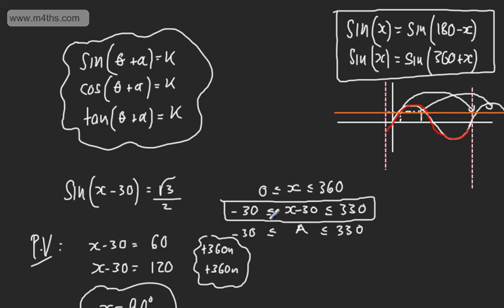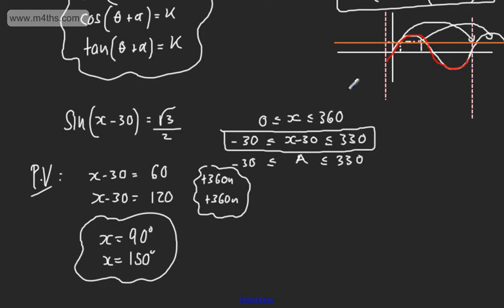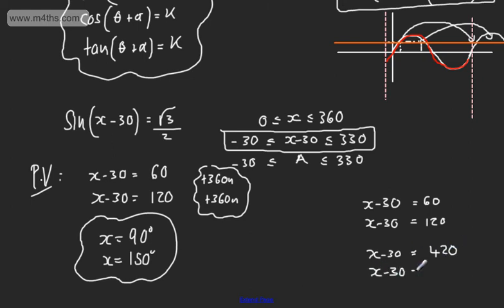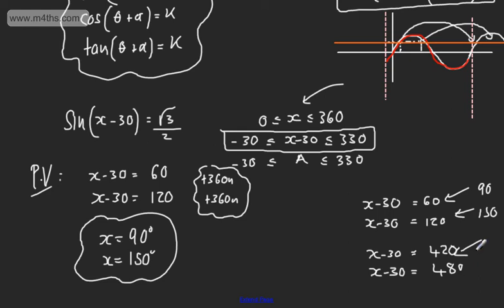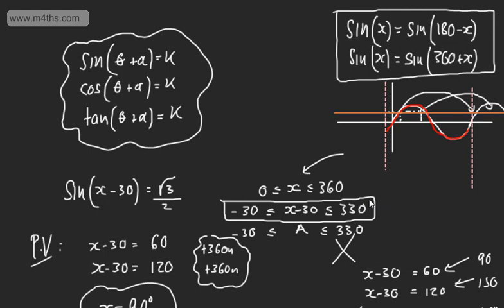Alternatively, you can just list out multiples: x minus 30 equals 60, x minus 30 equals 120, x minus 30 equals 420, x minus 30 equals 480, x minus 30 equals minus 300, minus 240, and so on. Then simply add 30 to each and see which fit back into the interval. We can see 60 gives x equals 90, 120 gives x equals 150, while 420 gives 450 and 480 gives 510 — those are not in the interval.